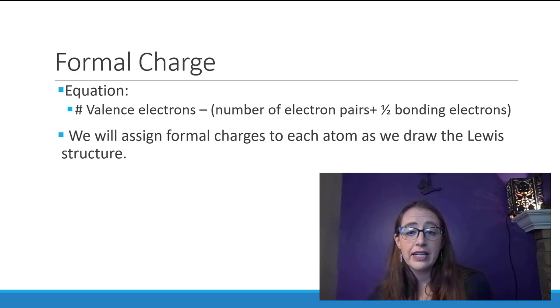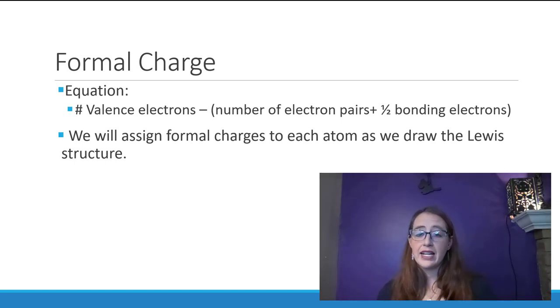As far as how many it owns in the molecule, its lone pairs are counted completely as that atom's own. So if an atom has three lone pairs, that's six electrons that that atom has for itself.